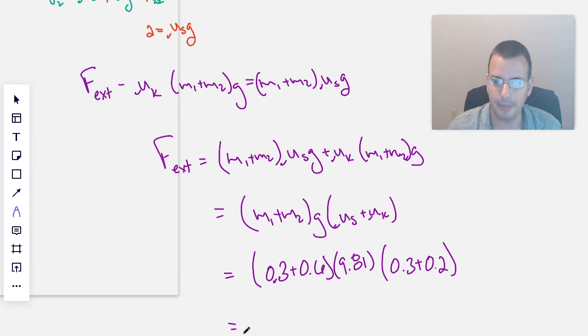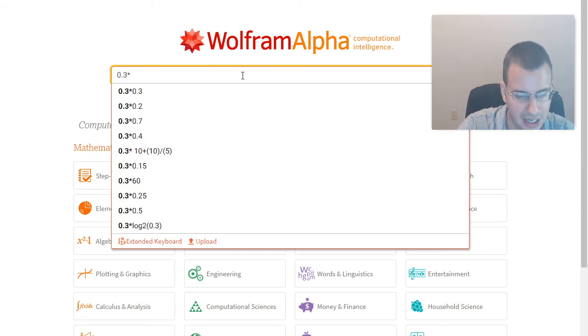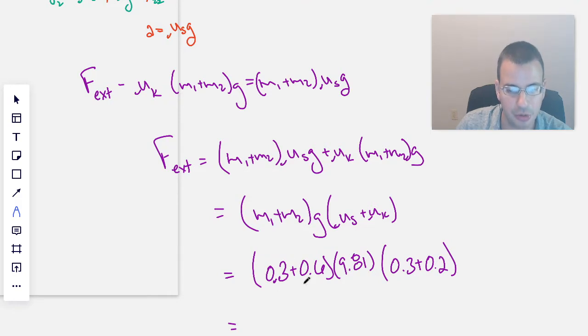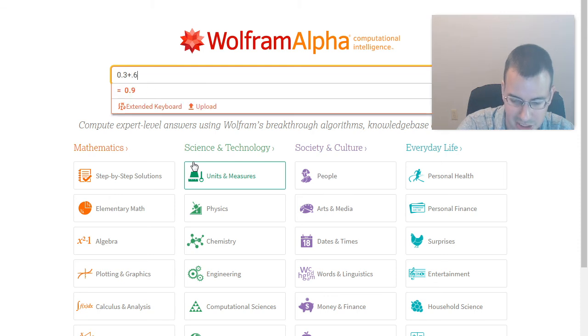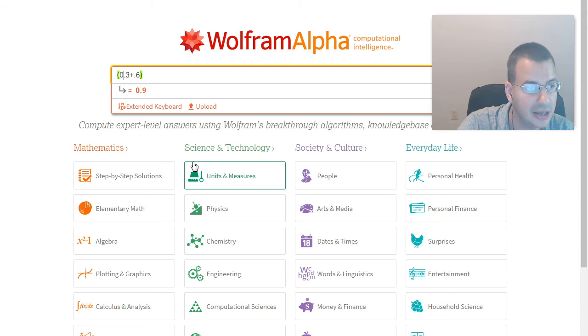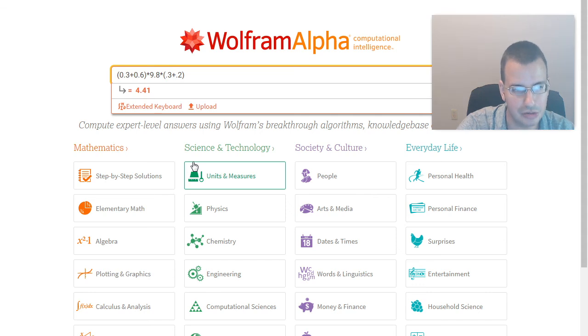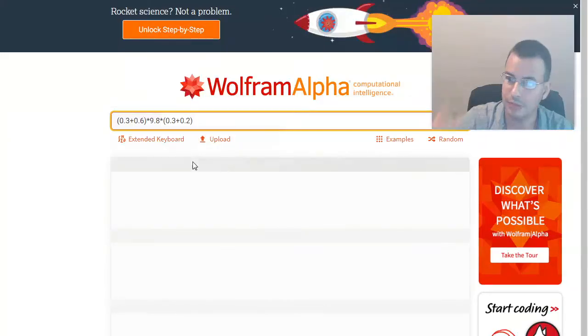And then going to Wolfram, we'll do, let's see, 0.3 times, did I forget it already? I already forgot it. 0.3 plus 0.6, yep. 0.3 plus 0.6, which gives us 0.9. Multiply that times gravity, I'll put a 0 in there just for consistency, it doesn't matter. Wow. Times, and then we're going to do 0.3 plus, I forgot the zeros, I know. You're like, it doesn't matter, it does to me, it does to me. All right, and so then we get a final answer of 4.41.